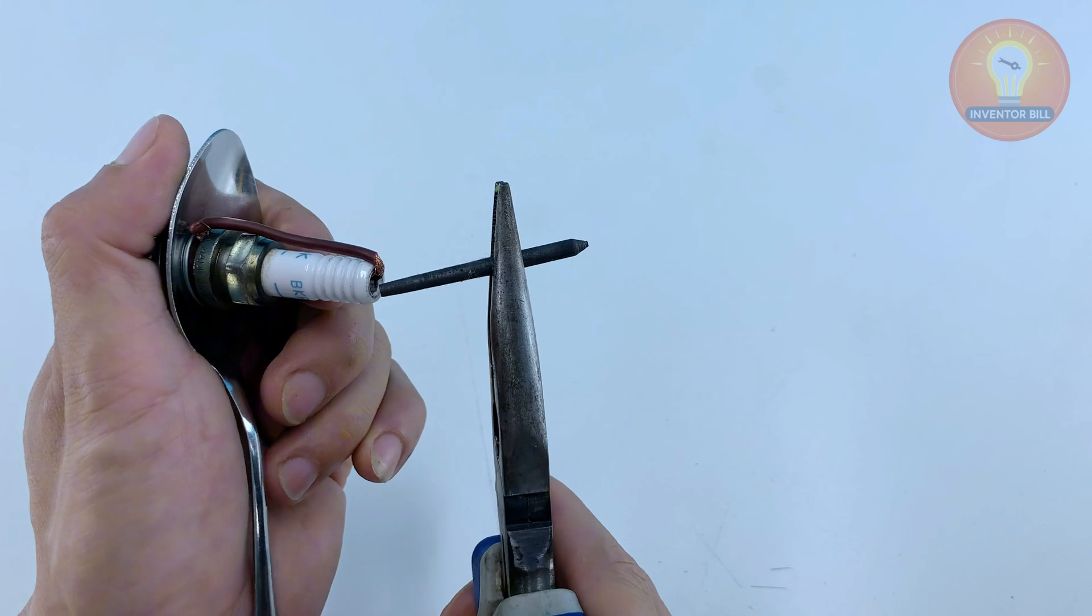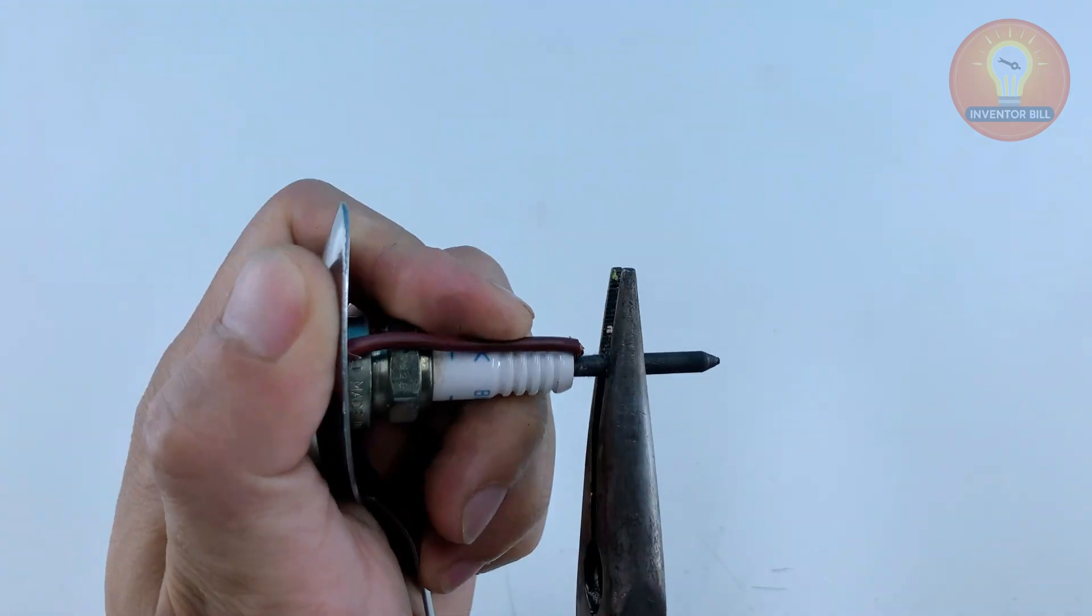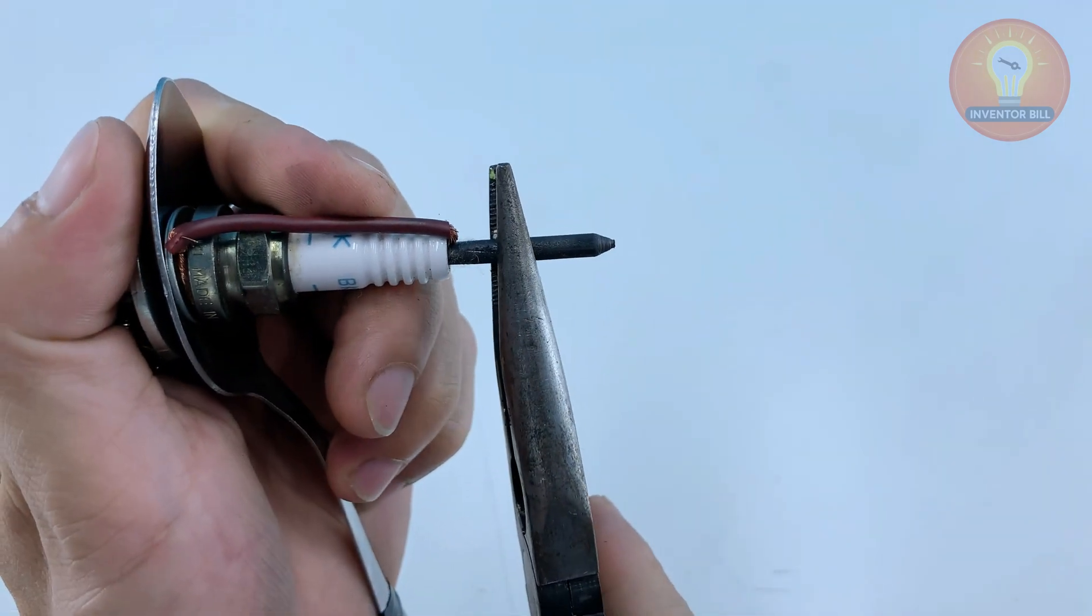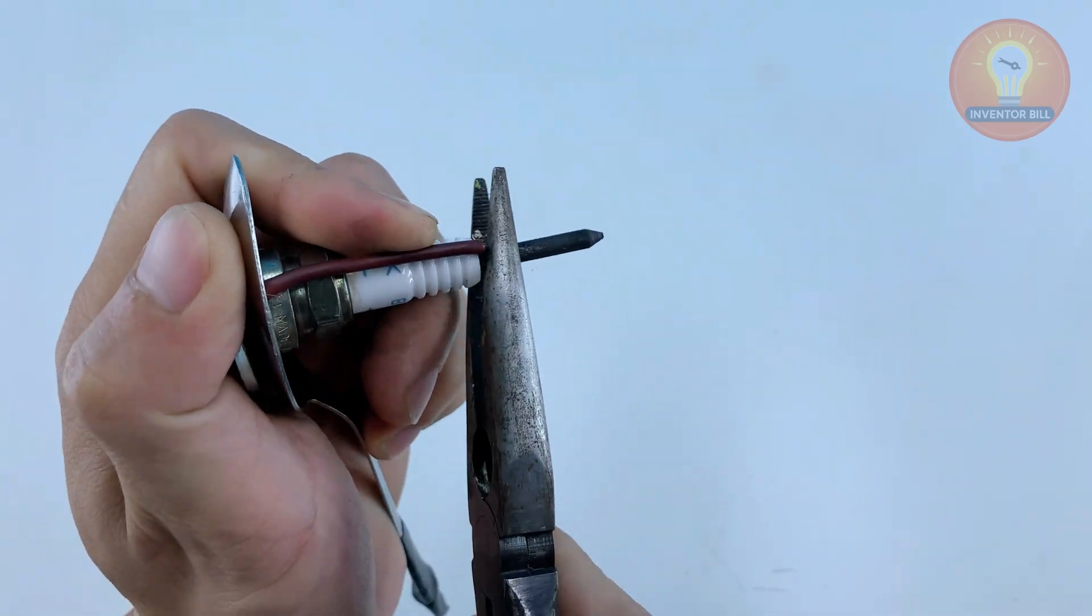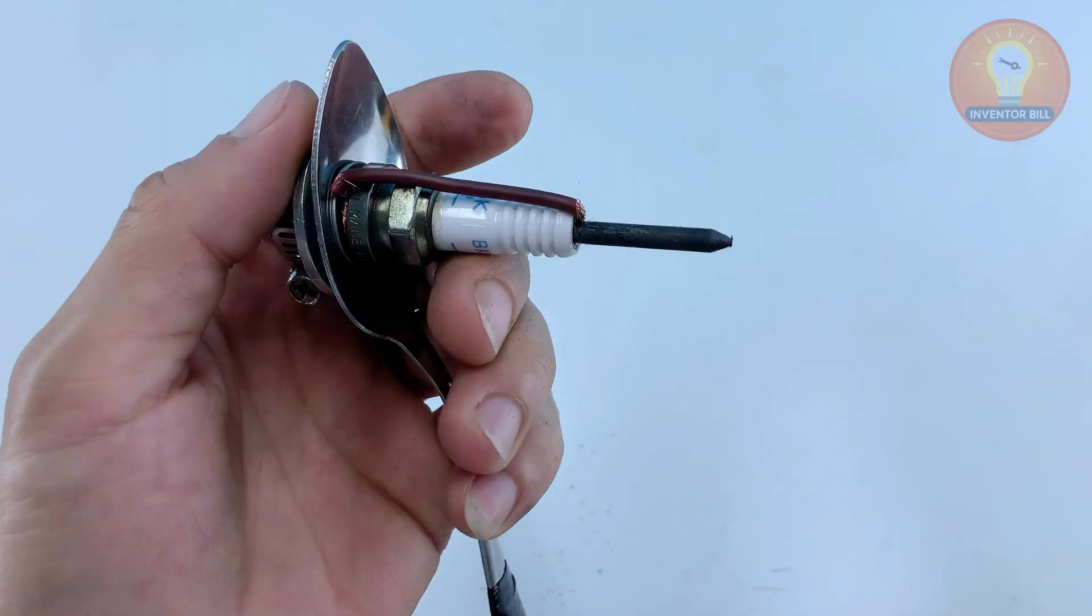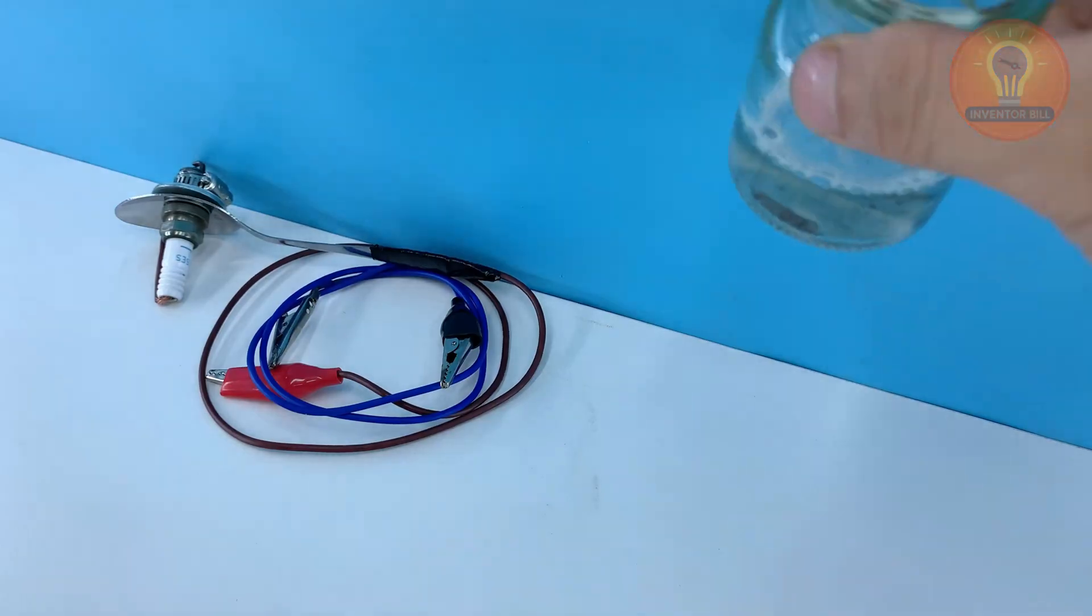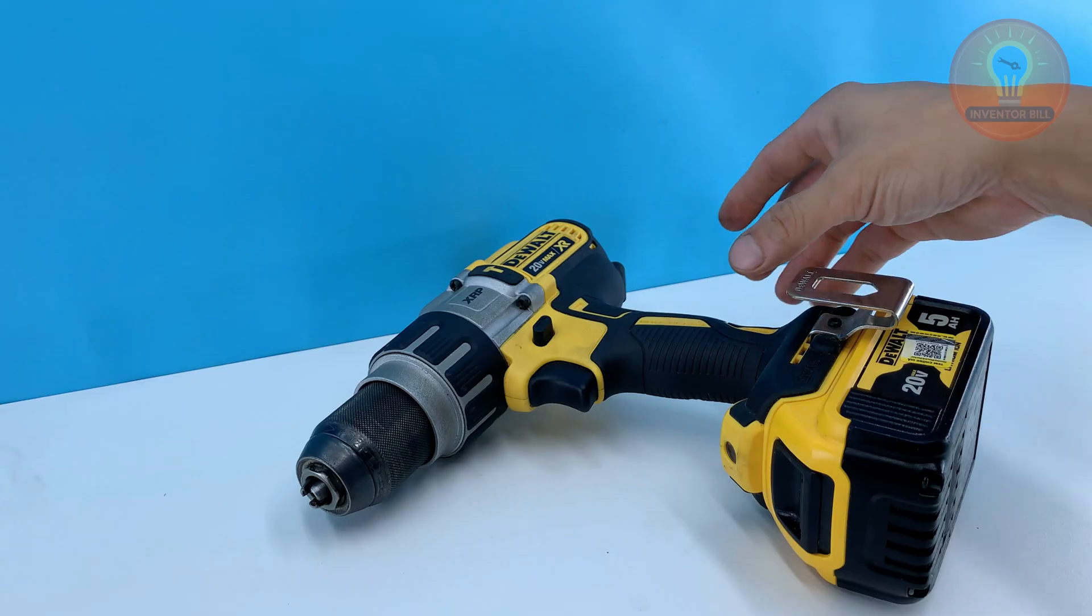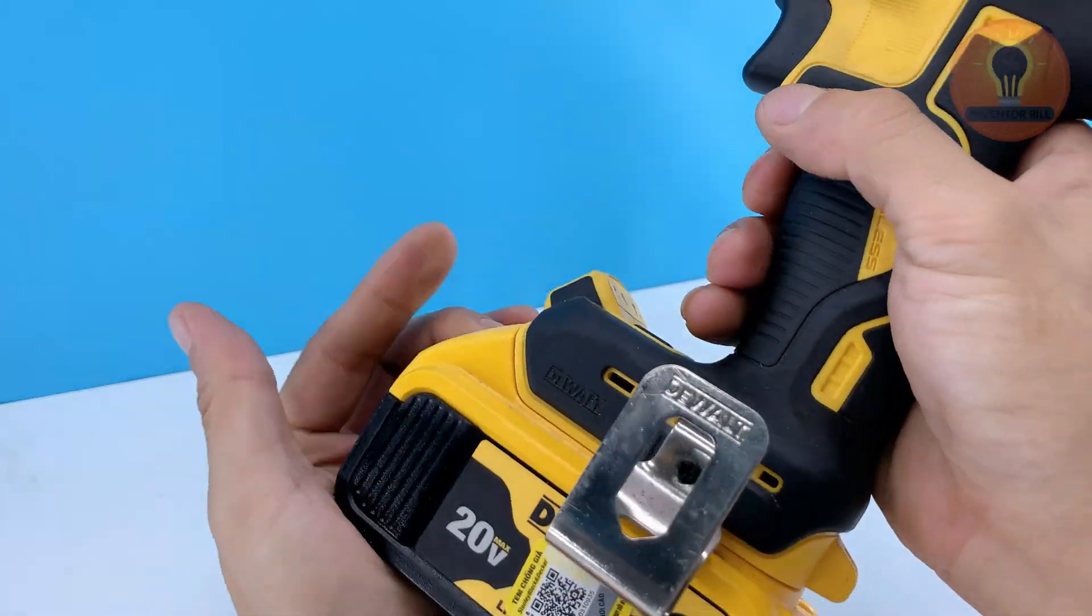Now take the sharpened graphite core and insert it into the top of the spark plug until it makes firm contact with the copper wire you prepared. Give it a small press so the connection stays solid. This setup turns the spoon into a reliable holder for the heated carbon tip, and you're just about ready to fire it up.